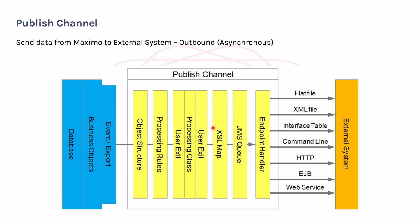Hello friends, this is Prashant again. In today's video we are going to talk about processing rules. I have shown you this particular diagram earlier where I explained how the publish channel works. Publish channel, as we know, is required when you want to send some data from Maximo to any external system asynchronously, and in the publish channel there are multiple layers by which data processes.